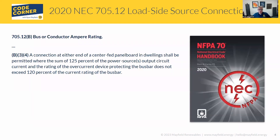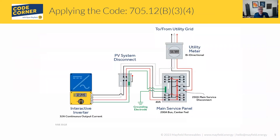The other section I wanted to talk about today is B34, and it talks about center-fed panel boards. So in dwellings — this is very specific to residential applications — we have a lot of existing panel boards, main service panels, where it's a center-fed panel. And if you go back and look at what we talked about with the 120% rule in B32, it talks about having the power production source — our PV system — where that interconnection has to be at the opposite end of the utility source when we're utilizing that 120% rule. This allowance is saying that we can still utilize that 120% rule even if you have a center-fed panel board.